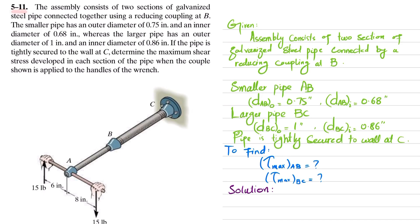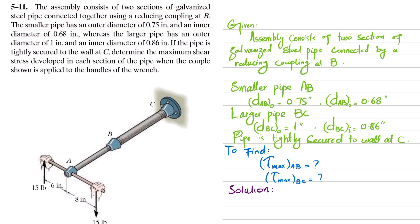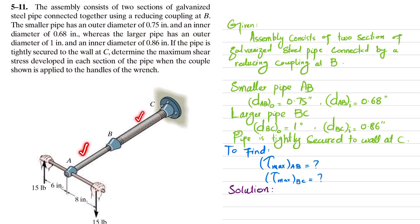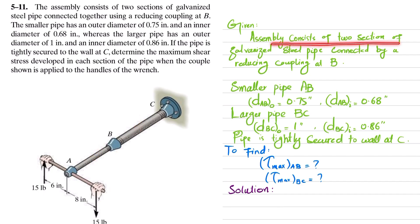Welcome back. Problem 5.11 — the assembly consists of two sections of galvanized steel pipe connected together using a reducing coupling at B. The smaller pipe has outer diameter 0.75 inch and inner diameter 0.68 inch, whereas the larger pipe has outer diameter 1 inch and inner diameter 0.86 inch. The pipe is tightly secured to the wall. Determine the maximum shearing stress developed in each section when a couple is applied to the handle of the wrench.